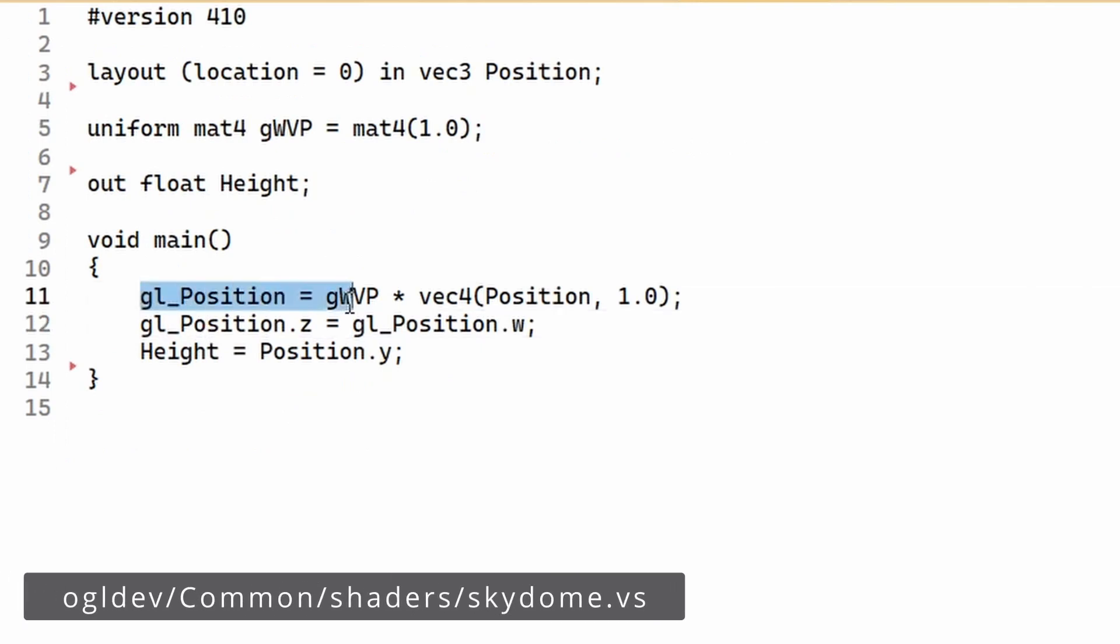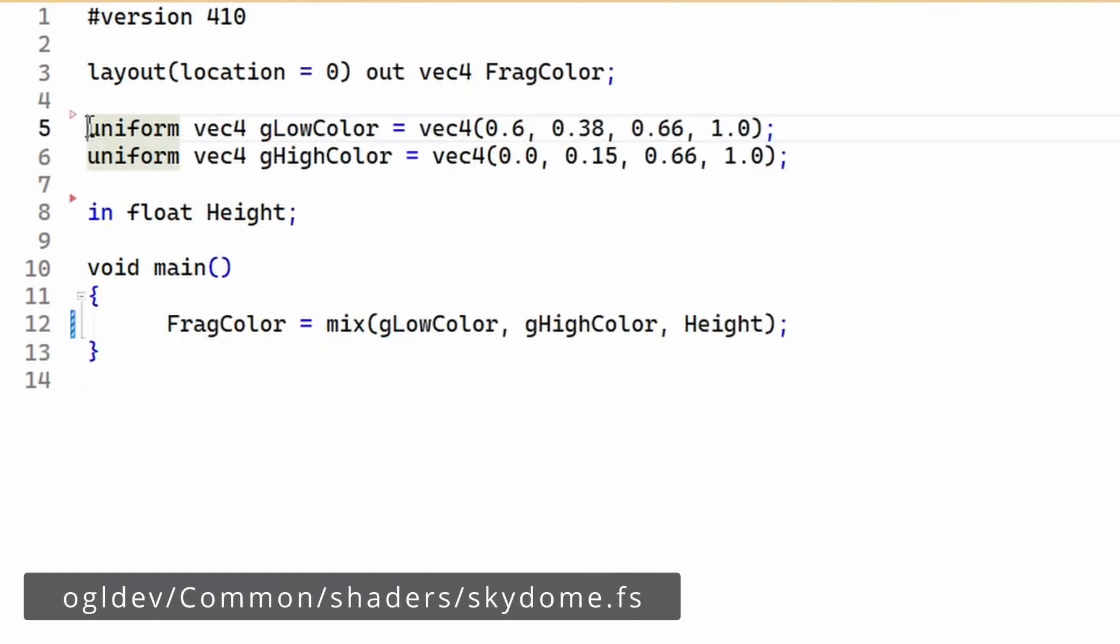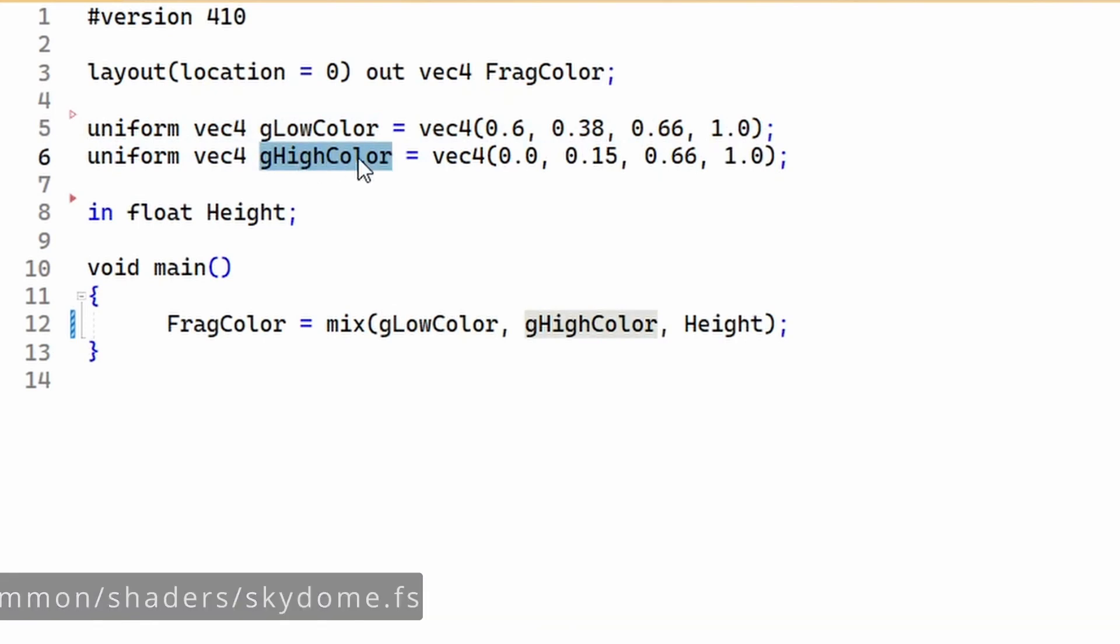In the vertex shader we transform the position to clip space as usual and we also set the Z to be equal to W. Again this is part of the trick that I mentioned and we also send the original Y component of the position vector in local space to the fragment shader. We will use that to interpolate between two colors so we are kind of assuming here that this will be between 0 and 1.